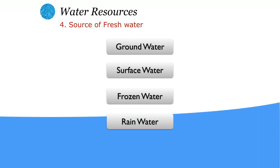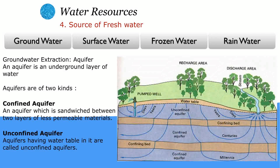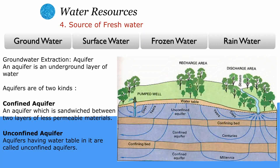There are four different sources of fresh water: groundwater, surface water, frozen water, and rainwater. Groundwater is also known as aquifer — an underground layer of water. Aquifers are of two types: confined and unconfined. Confined aquifers are sandwiched between two layers of less permeable membrane, so they cannot easily be used. Unconfined aquifers are available in the upper part of the surface and can be used by human beings.